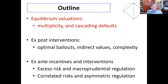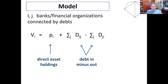Simple outline: I'll start with our model and talk about multiplicity and cascading defaults, then we'll talk about ex post optimal bailouts and the complexity of those, and then we'll talk a little bit about ex ante incentives and interventions. The model is really simple. We're looking at banks — or any kind of financial organizations that can have assets and liabilities and potentially default. Everything here is going to be static; we're not doing a dynamic model.